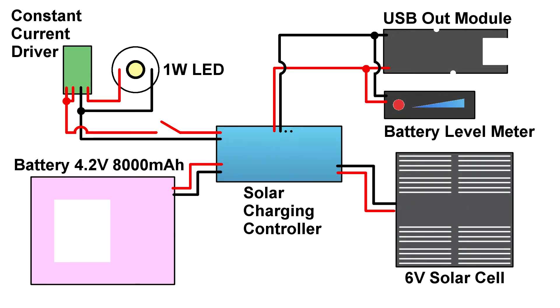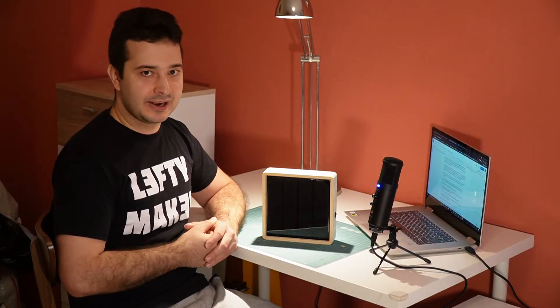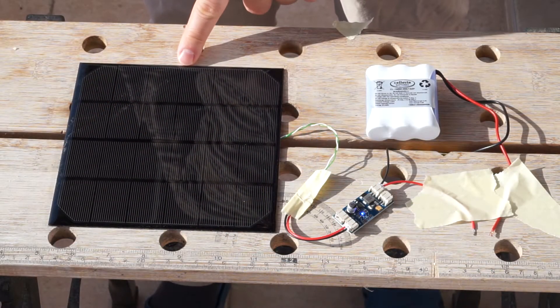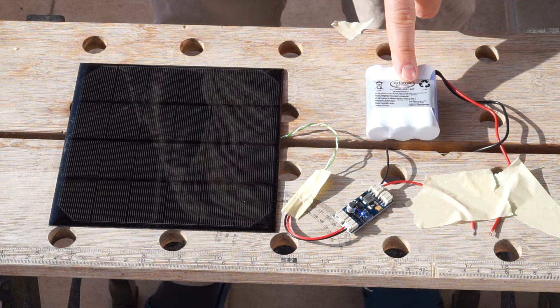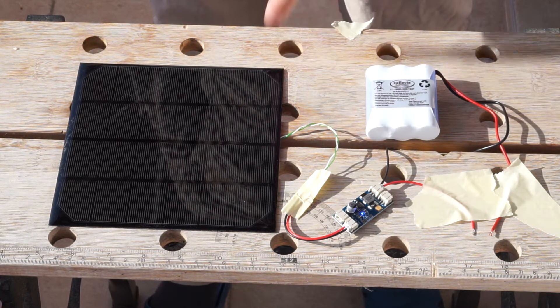Here is a diagram of how everything is connected. You can pause the video to take a closer look. But before taking out the soldering iron, I had to test if the components would actually work together. So I connected the solar cell and the battery to the charging controller and went outside for a test.